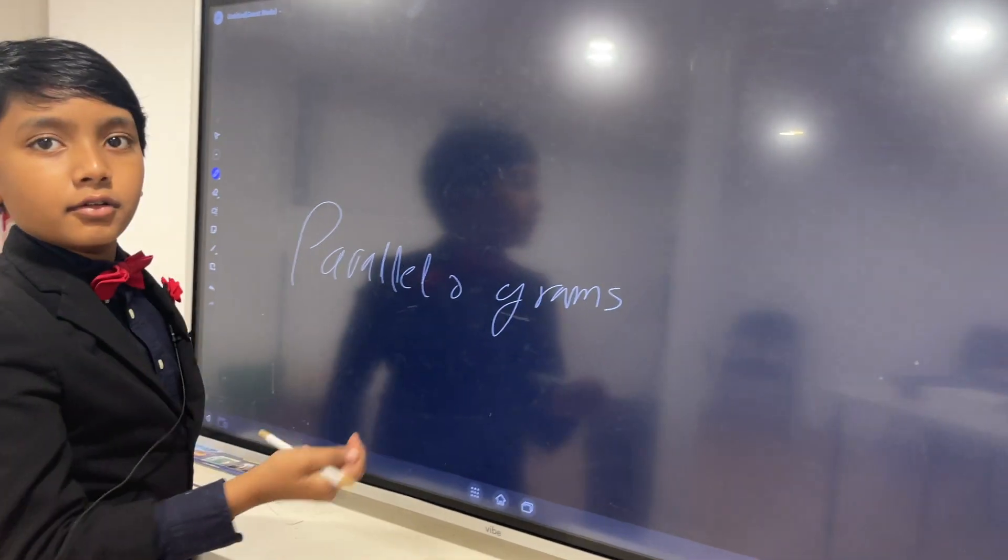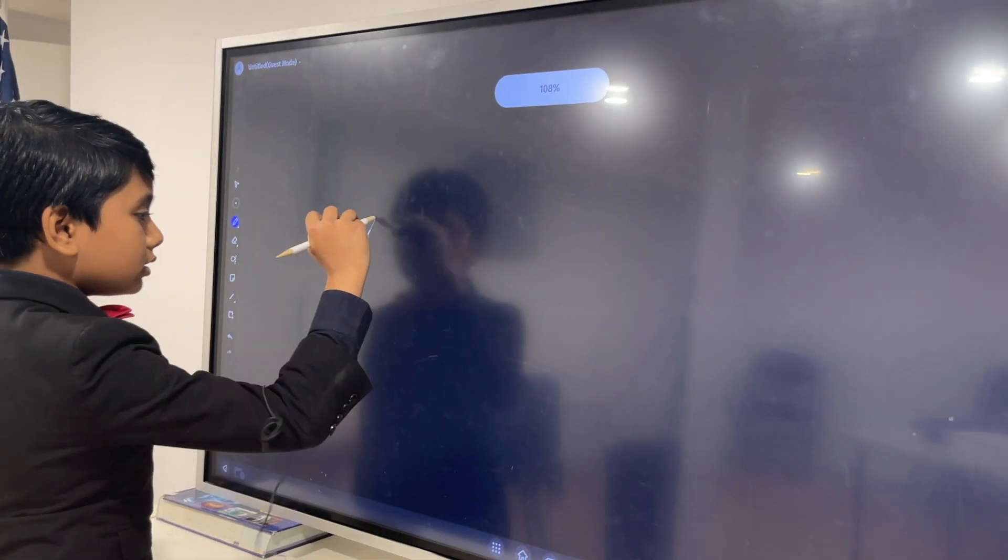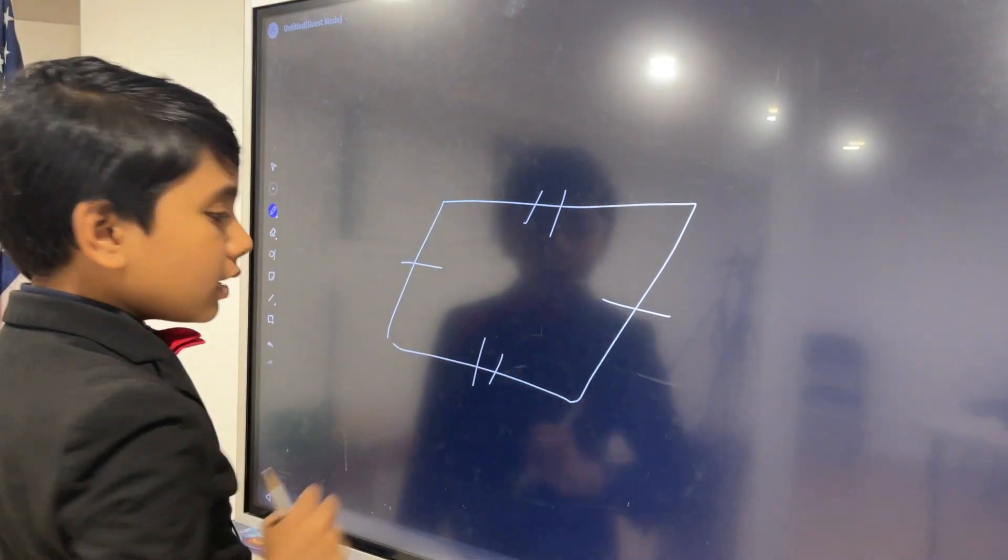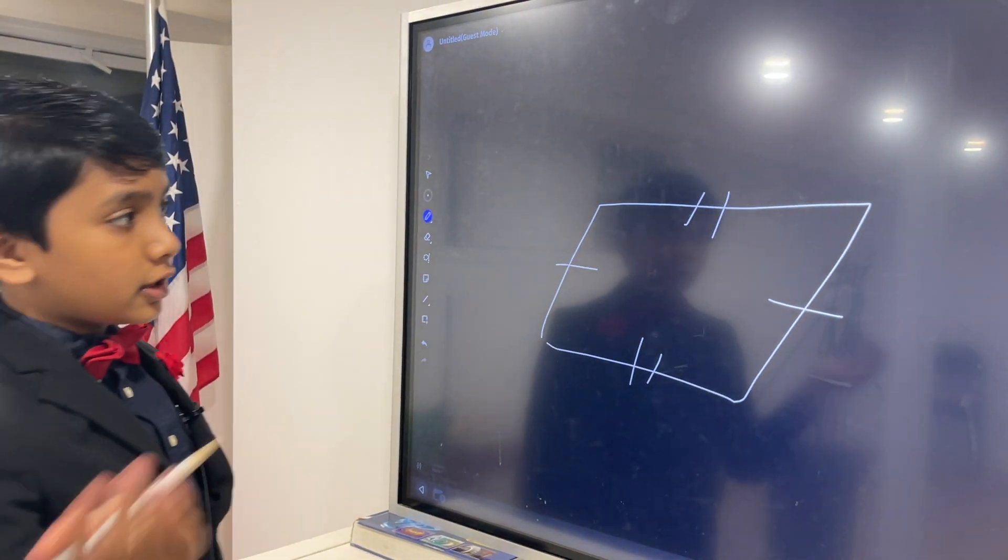Now what are all parallelograms? Well, they look something like this. Now, some main features are that opposite sides are congruent.